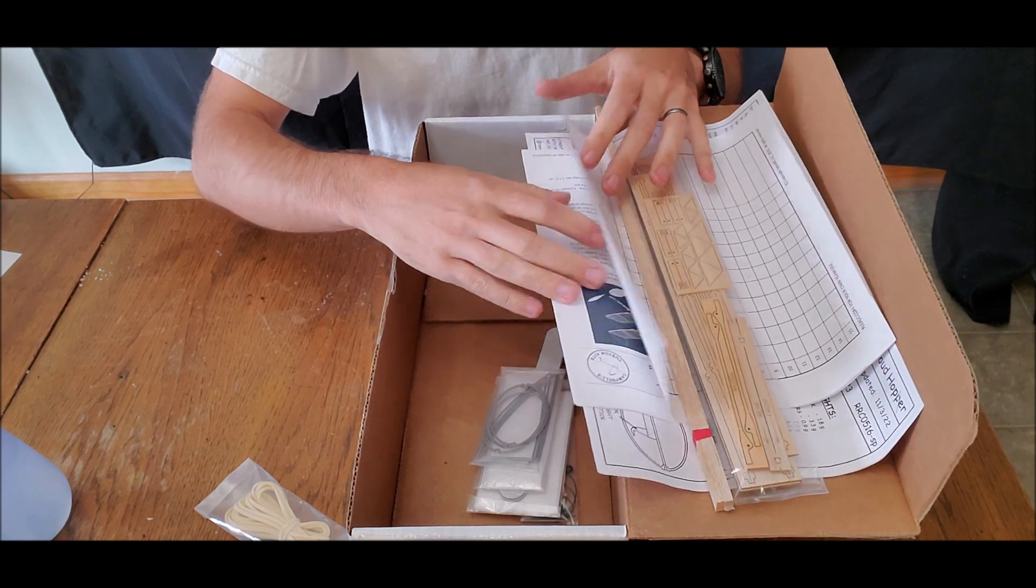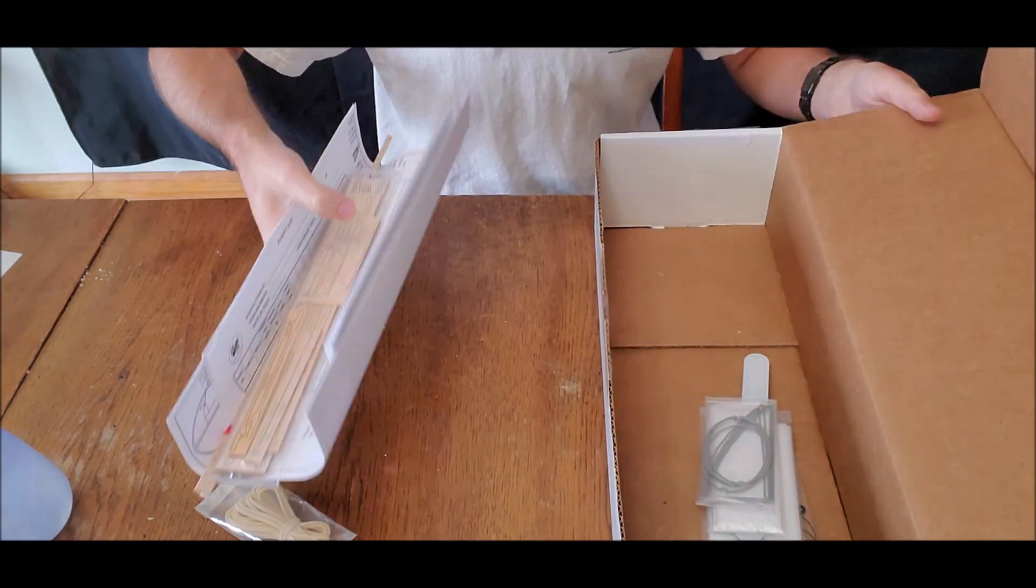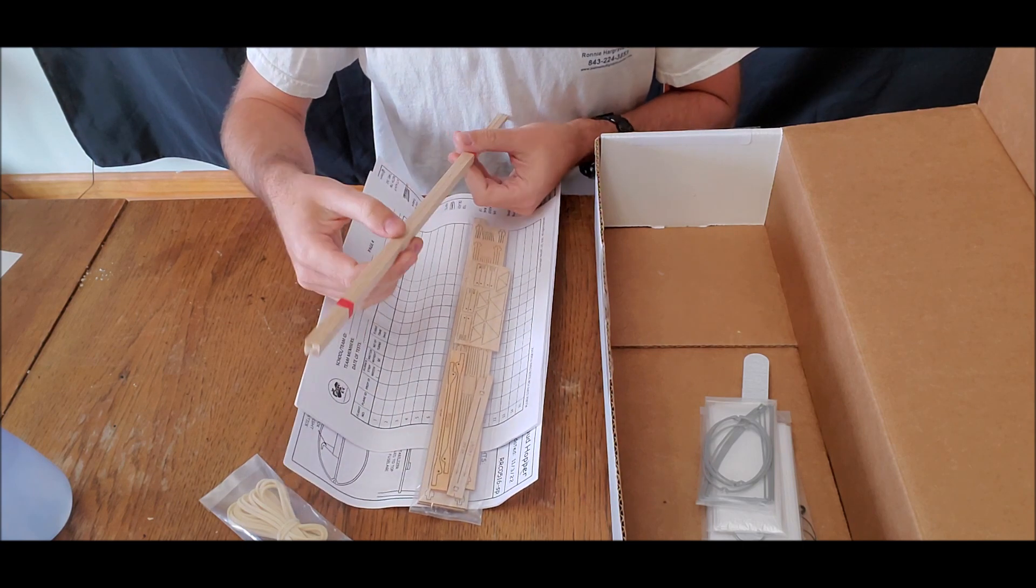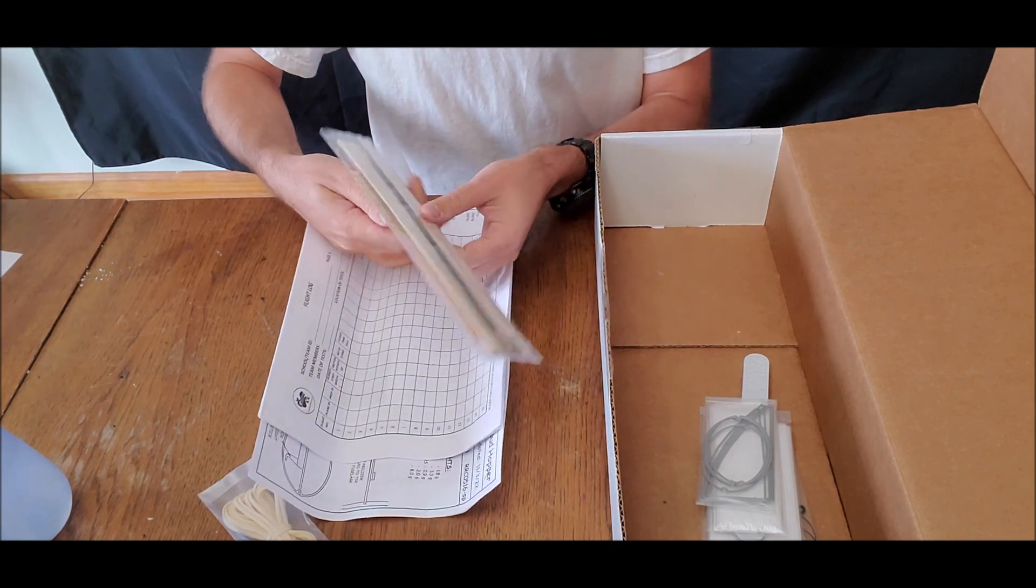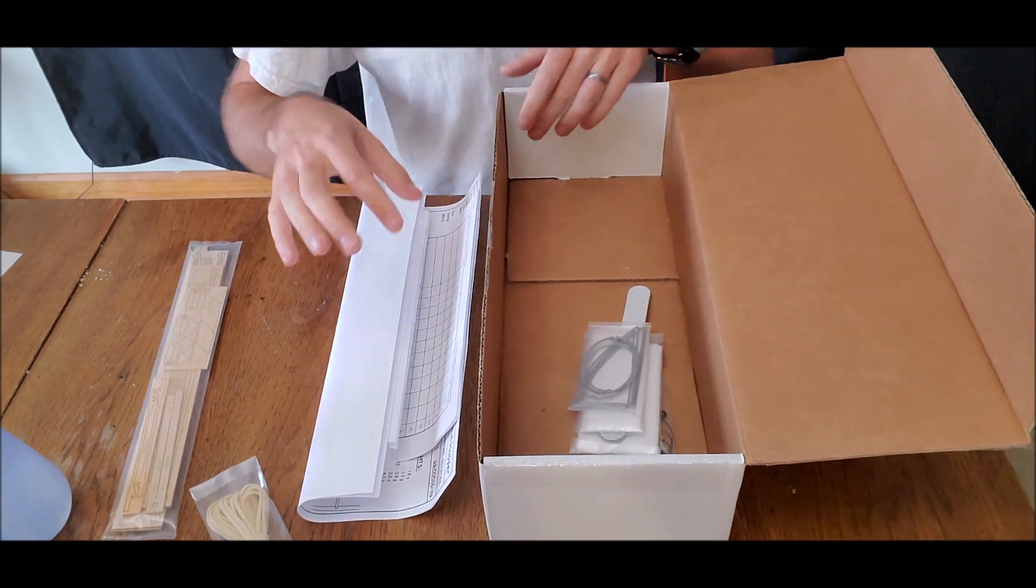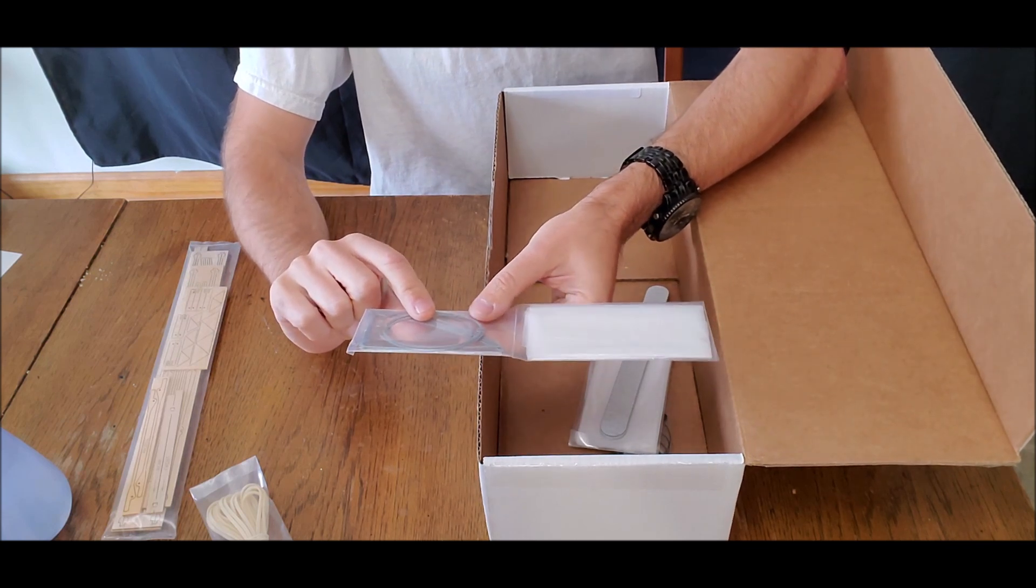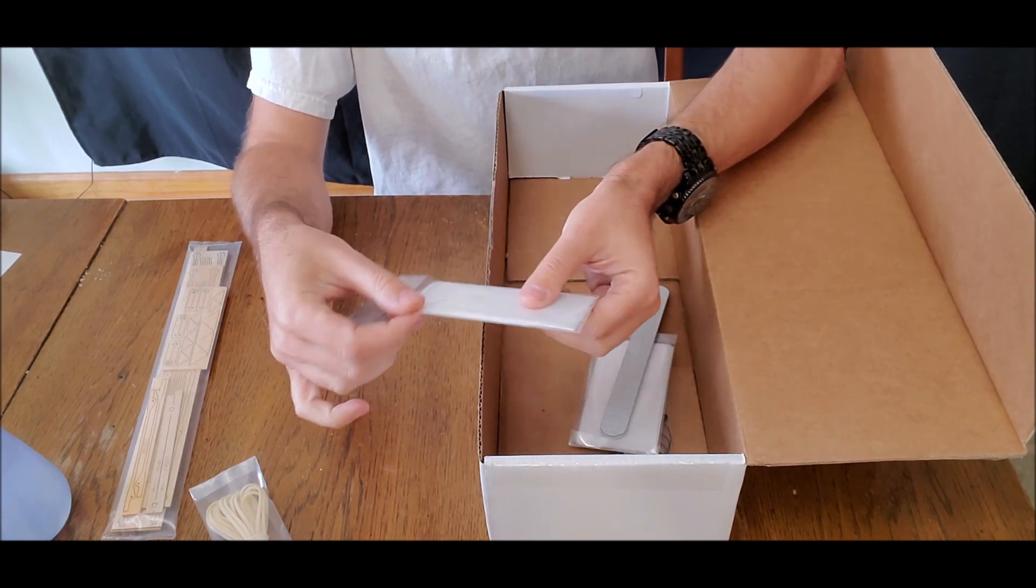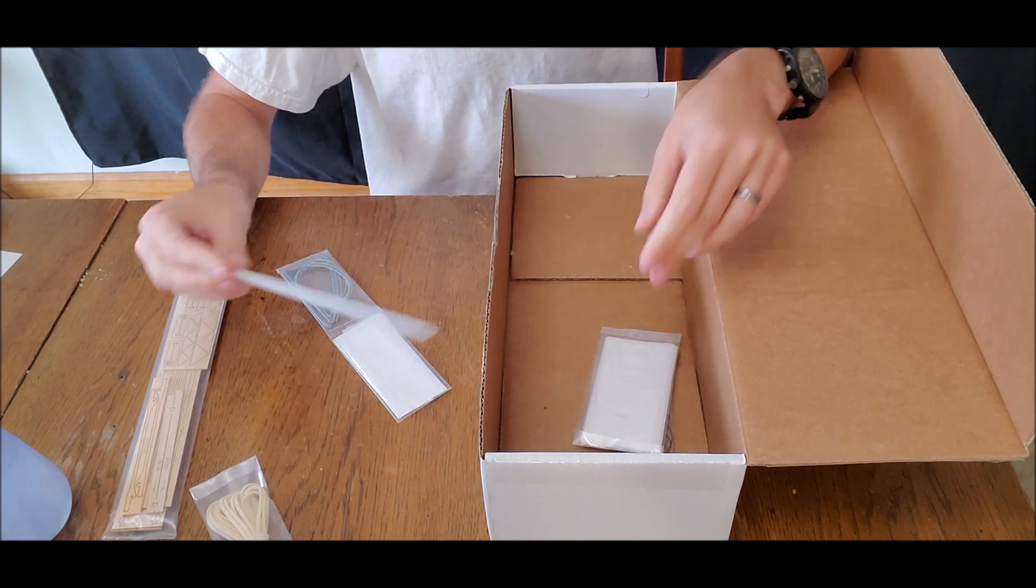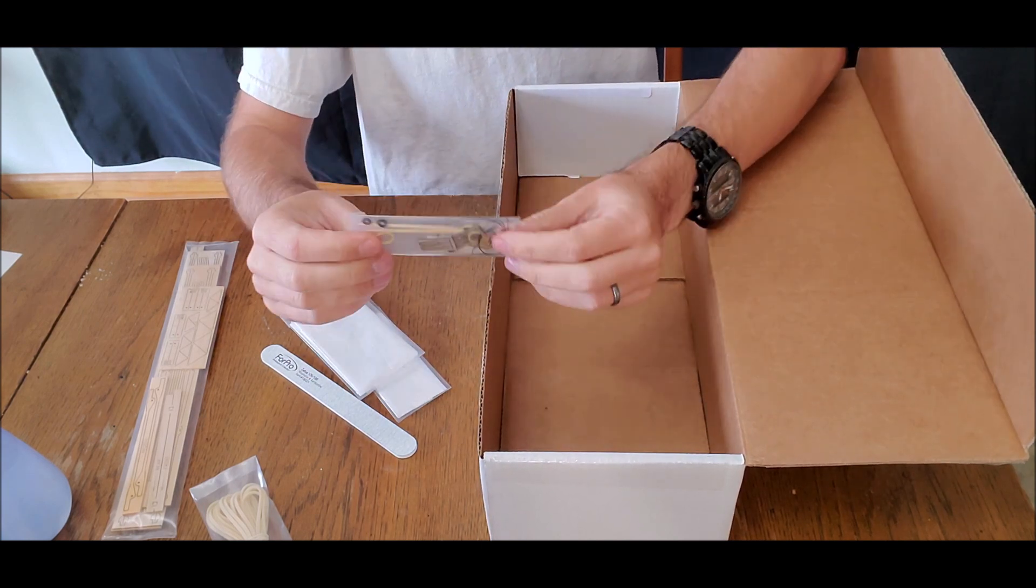You've got your rubber here in its own little packaging. Then we'll pull this out - this is our documentation. This includes full-size plans, your flight logs, and written hard copy of your instructions. We'll slide the box aside.